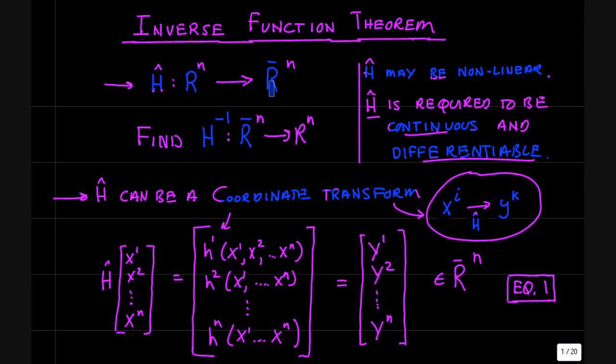h is giving you n different numbers for each point in R^n. We can write out the n functions, the components of the function h in column format here. h is mapping an element of R^n over here to some y values over here in R^n bar. And so for each y, there has to be a component function h of x^1 through x^n and so on. So this definition of h here is actually defining n separate functions, each of which must be continuous and differentiable. We'll call this equation 1 right here in this column notation.